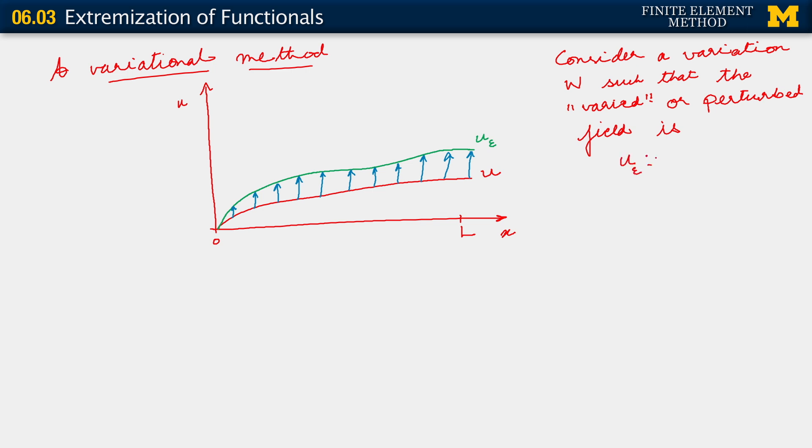U sub epsilon, which is now defined as the original field u plus epsilon times w. Now, I've introduced two new quantities here: w as well as epsilon. I need to say something about them. Epsilon is just a number. So epsilon belongs to the real numbers. That is just a number.